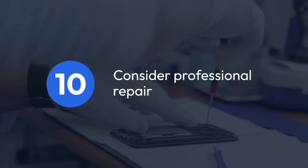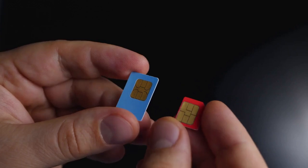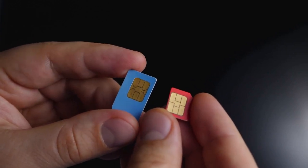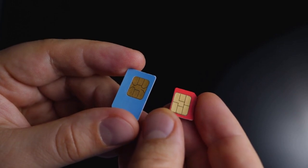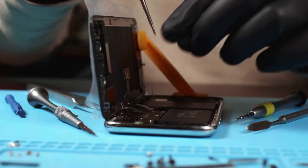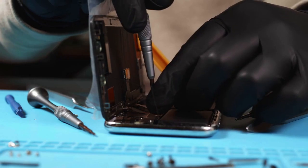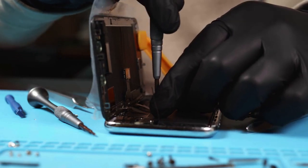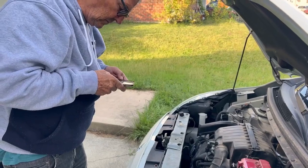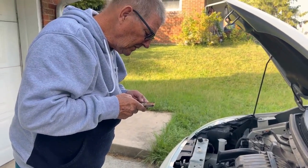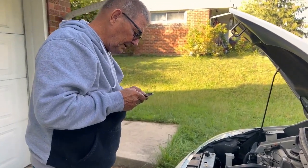10. Consider professional repair. If the problem continues after all other troubleshooting steps, your phone may have a hardware issue affecting the SIM card reader. In this case, it's best to take your phone to a professional repair shop for diagnosis and repair. Remember to always back up your important data before performing any major troubleshooting steps like factory resets.